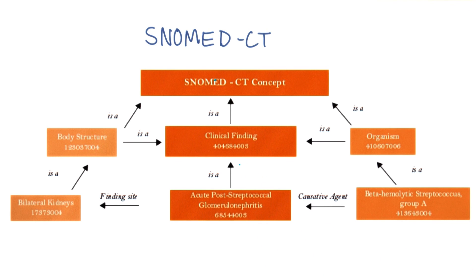Using this hierarchy, a computer could recognize these relationships. This is actually a simple example, showing only three of the 18 top-level components in the SNOMED hierarchy: body structure, clinical finding, and organism.